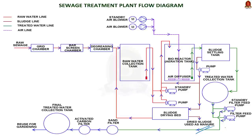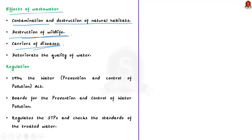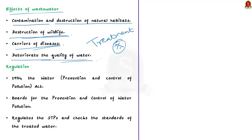Why should sewage or wastewater be treated? The most immediate effect of untreated wastewater on the environment is contamination and destruction of natural habitats and wildlife. Apart from that, wastewater is one of the worst carriers of diseases. According to a World Health Organization report, more than 3.4 million people die each year from waterborne diseases. It is therefore crucial to treat sewage before releasing it into the environment. The Ambatur Lake in Chennai is polluted with untreated sewage, causing health concerns for those who come in contact with the lake water.